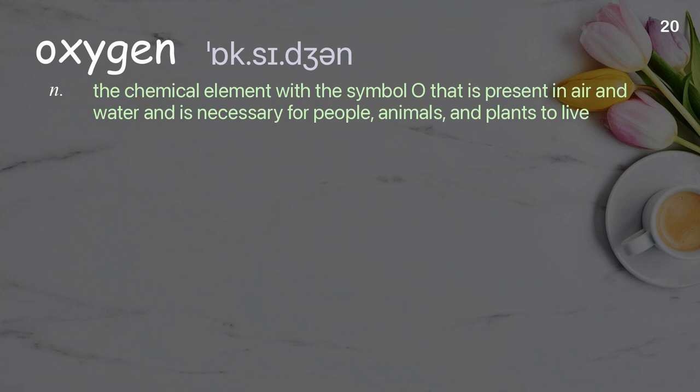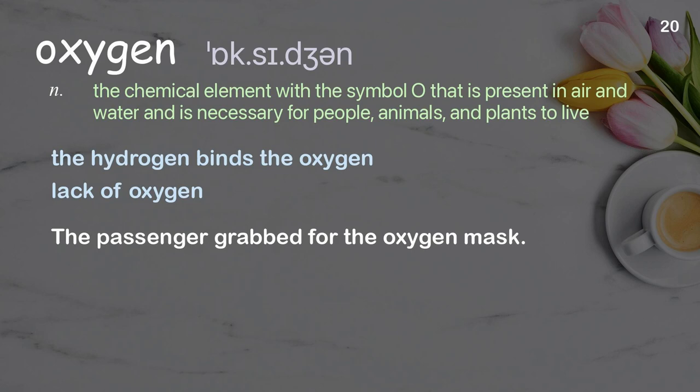Oxygen: the chemical element with the symbol O that is present in air and water and is necessary for people, animals, and plants to live. Examples: the hydrogen binds the oxygen; lack of oxygen. The passenger grabbed for the oxygen mask.